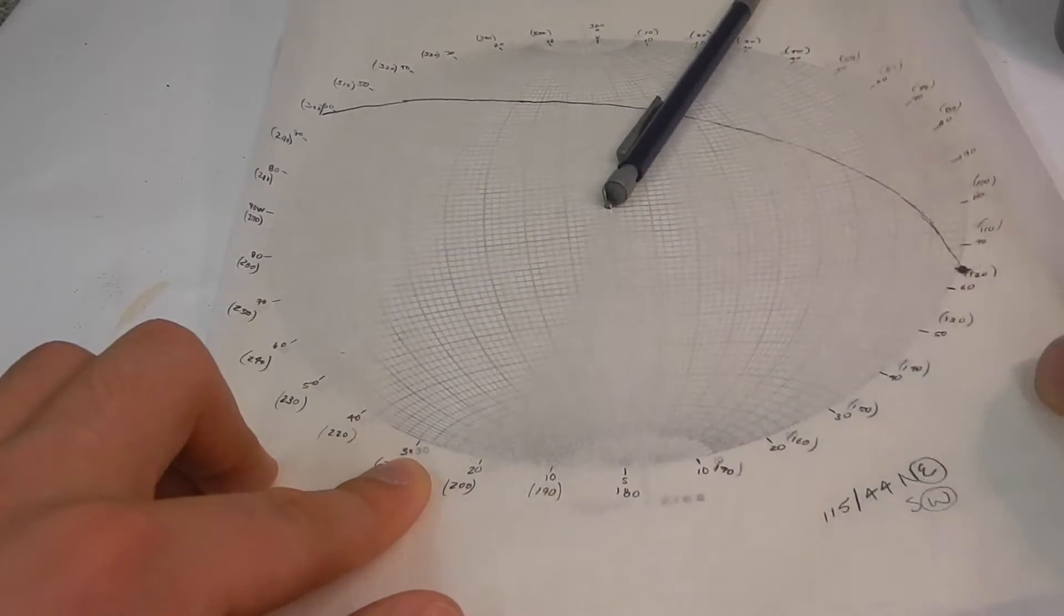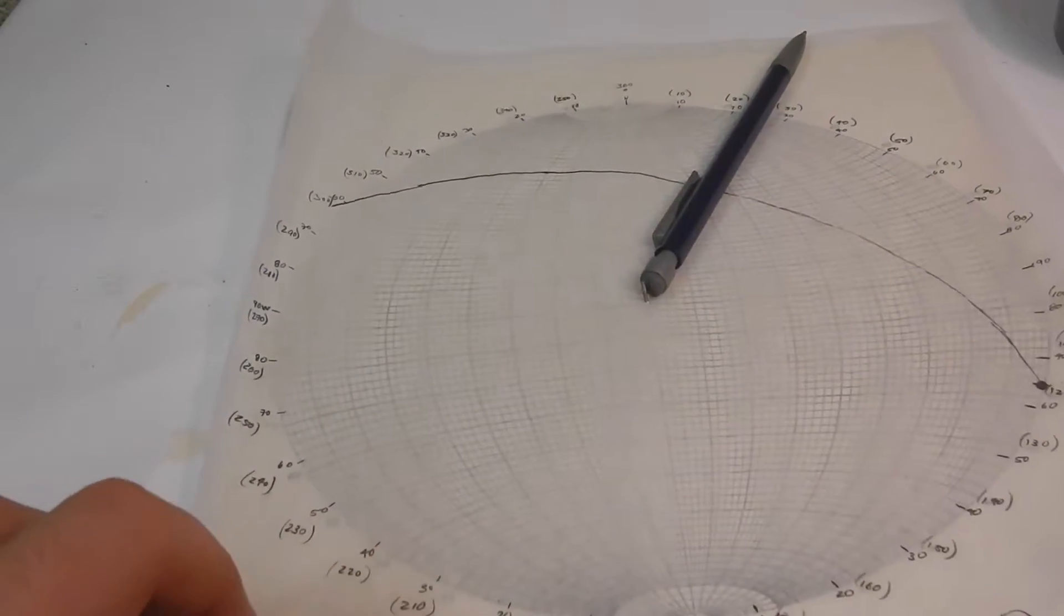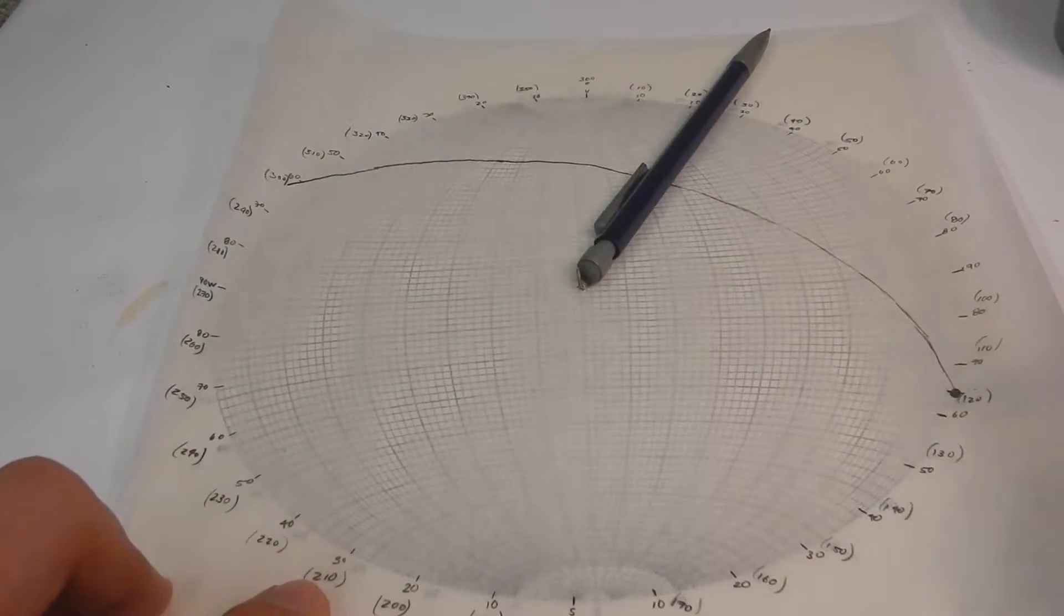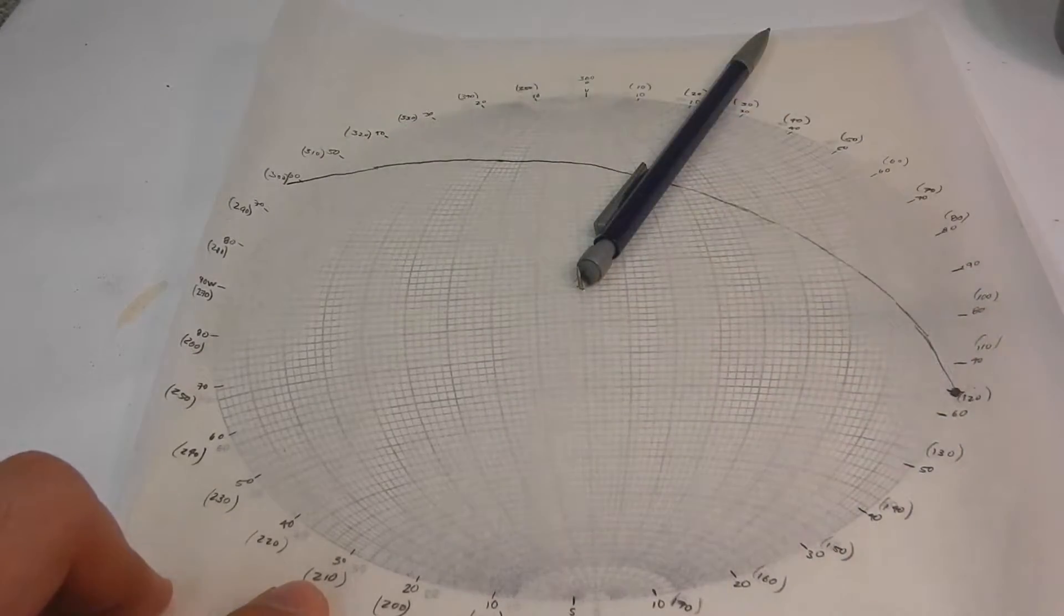It's always important to go back, especially when you first start doing these stereonets, and do a quick check. Whichever way it's curving is the way it's dipping, and you can check if you might have switched the dip.